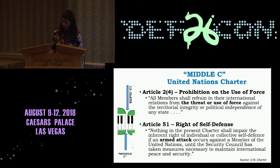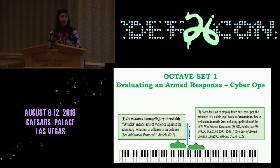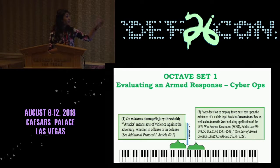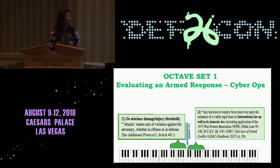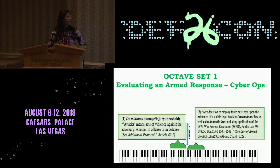We are ready to move on to our first scale — octave set one — which is how states evaluate an armed response to an aggressive act in cyberspace. Step one: the victim state needs to evaluate what type of harm was produced. Here we have the de minimis damage or injury threshold — when I hear armed attack, I think high-level destruction. Did the state suffer high-level destruction in the form of a cyber attack? That analysis will take in a variety of factors: time, place, manner, surrounding circumstances, and not all of it will be known at the time of the attack. So it is a flexible analysis.